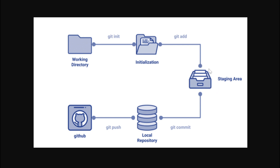Let me tell you about the staging area. We can save the files to the local repository through the staging area. We will edit it in the local repository, and we can also save to the remote repository. That is the purpose of the staging area. In the staging area, we use the git add command and mention the file name, and the particular file will move to the staging area.